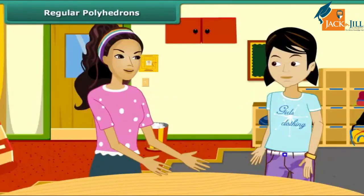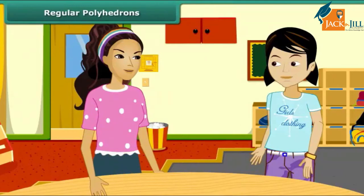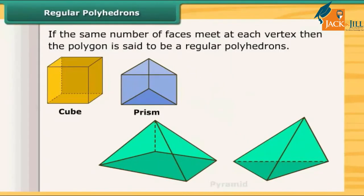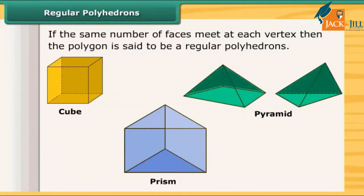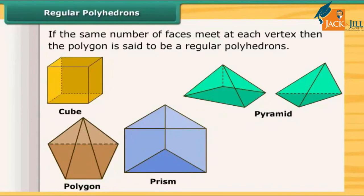We have two important members of the polyhedron family: prisms and pyramids. A prism is a polyhedron whose base and top are congruent polygons, and whose lateral faces are parallelograms in shape. On the other hand, a pyramid is a polyhedron whose base is a polygon of any number of sides, and whose lateral faces are triangles with a common vertex. If you join all the corners of a polygon to a point not in its plane, you get a model for a pyramid.